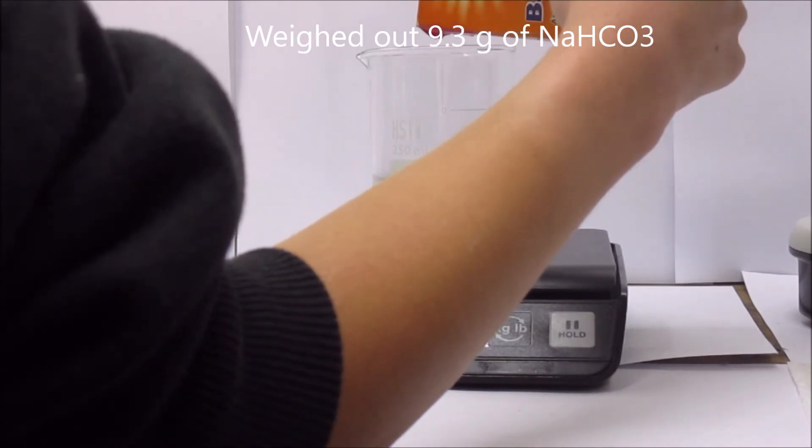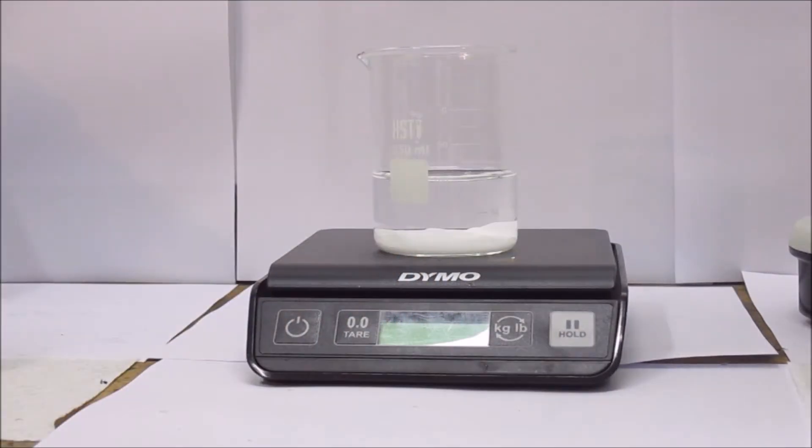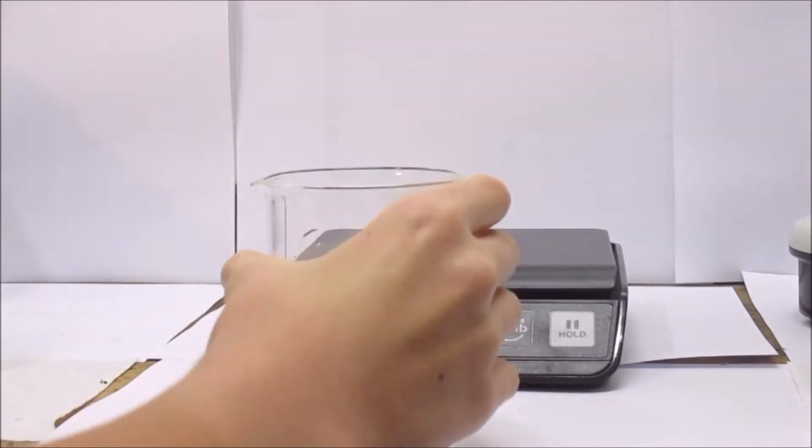Then I weighed out 9.3 grams of baking soda. After I completed that, I took it off the scale.